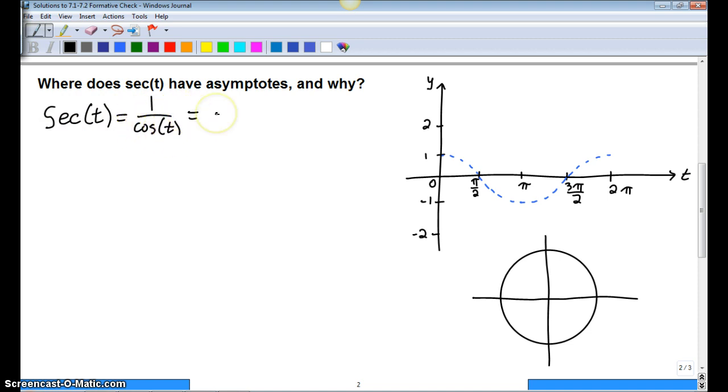So when we talk about asymptotes, we're really talking about when does the function not exist? And for our case, it's not going to exist when the denominator is 0 because you cannot divide by 0.